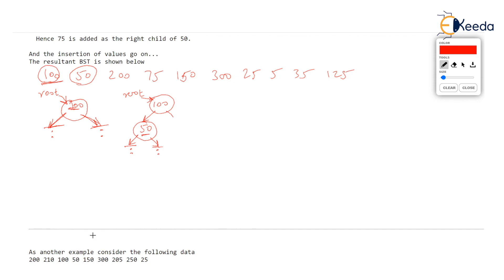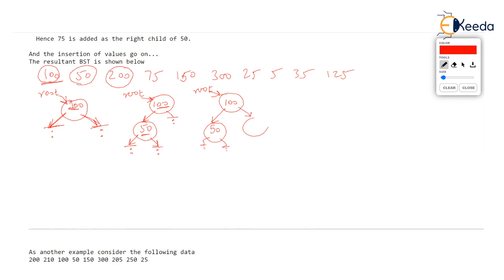Now let's take the second value 50. Where should 50 go in the current tree? 50 should go to the left of 100 because it is less than 100. So the left pointer of 100 — which was null — now points to a node storing 50. The left and right pointers of 50 will be null for now because 50 does not have any followers yet.